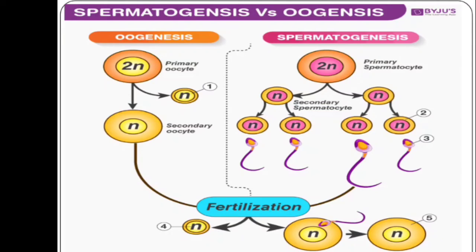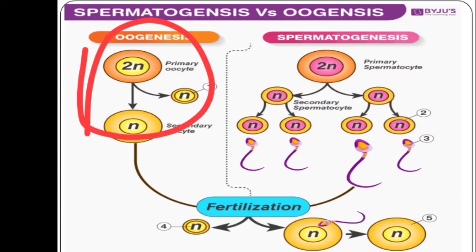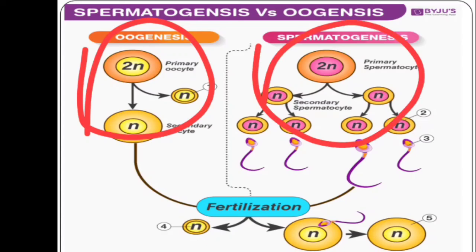In diploid organisms, female gamete formation is called oogenesis, and male gamete formation is called spermatogenesis. The female gamete is known as ovum — singular ovum, plural ova — also known as egg. Sperm cells are also known as antherozoids.